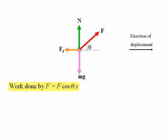The work done by the pulling force F is just equal to F cos theta times X as before, and that is positive because it's in the same direction as the displacement.